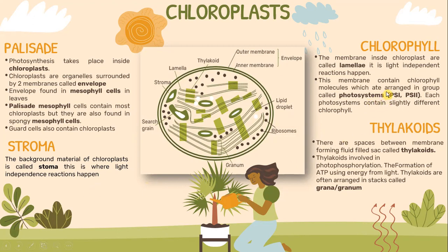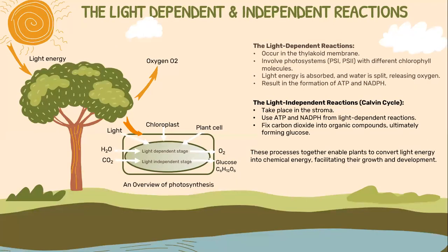The membrane inside chloroplasts is called lamellae, and it is where the light-dependent reaction happens. This membrane contains chlorophyll molecules, which are arranged in groups called photosystems PSI and PSII. Each photosystem contains slightly different chlorophyll. Thylakoids are spaces between membranes forming fluid-filled sacs called thylakoids. Their function is involvement in photophosphorylation — the formation of ATP using energy from light. The thylakoids are often arranged in stacks called grana.